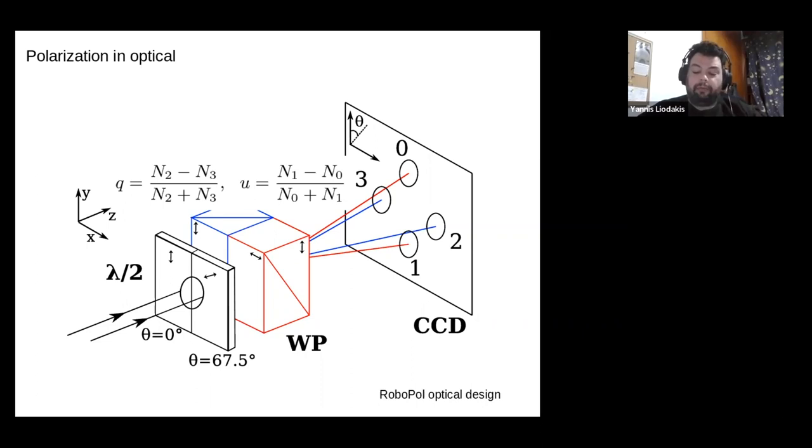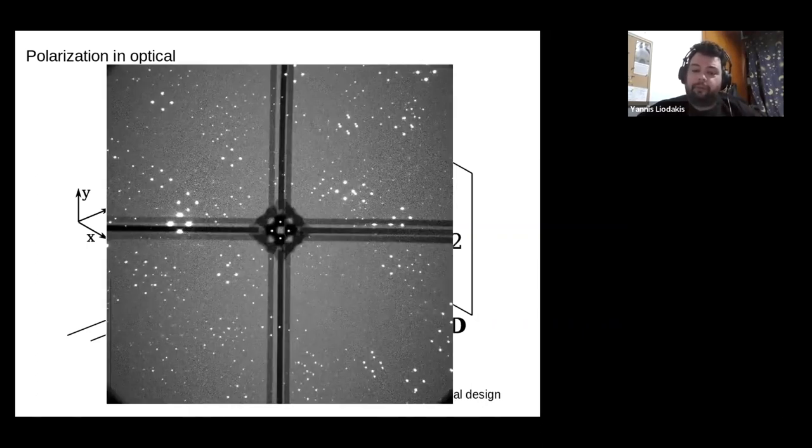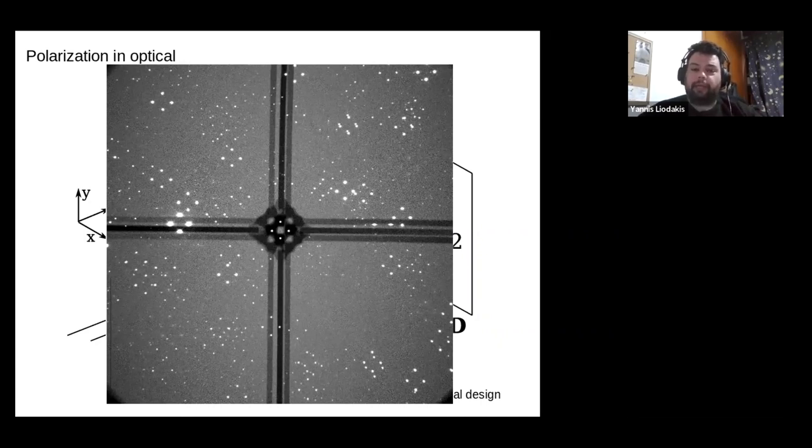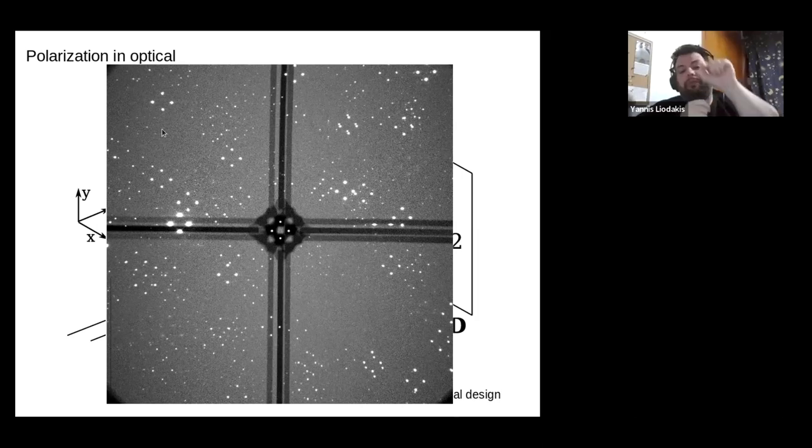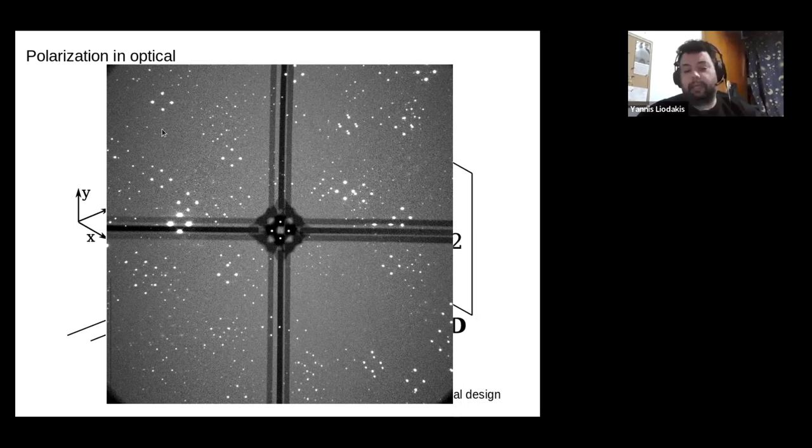If you're wondering what that looks like, this is an actual image from RoboPol, where every cluster of four spots that you see, like this one here, corresponds to one source on the plane of the sky, which is projected in four different polarization orientations on your CCD. And of course, the source that is of interest to us, we put it in the center where we have this mask and that allows us to block any unwanted light and reduce the background, which allows for much more precise measurements of the polarization.